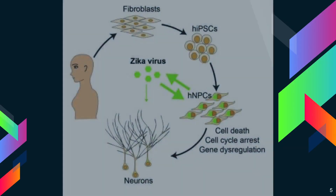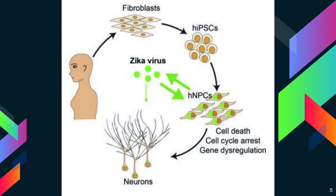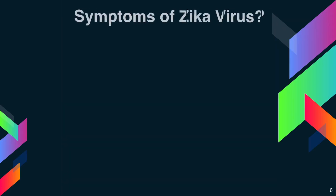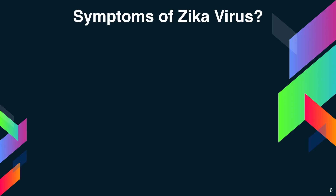In the next diagram, you can find how the Zika virus is affecting humans. In humans, it affects the fibroblasts. The Zika virus infects the neural progenitor cells (HNPCs), causing cell death, cell cycle arrest, gene risk regulation, and finally affecting the neurons.